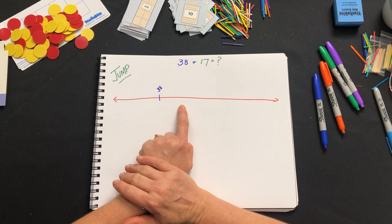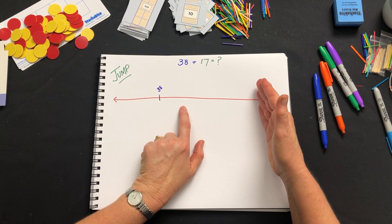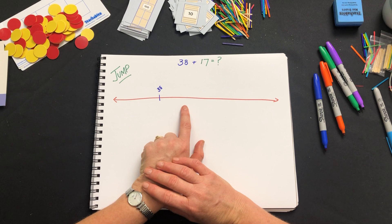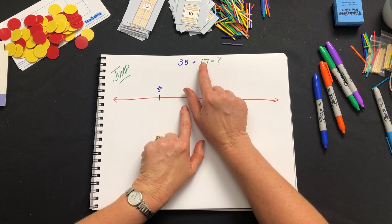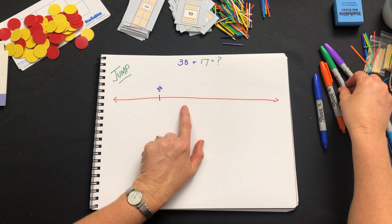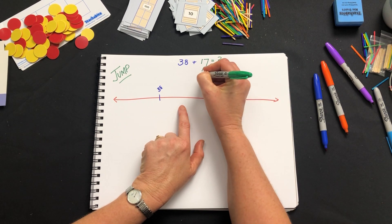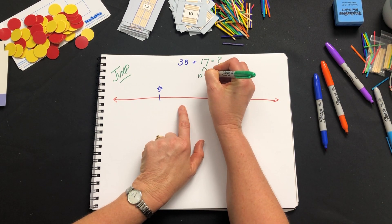So I'm going to jump but I'm not going to do just one jump and immediately add on the 17. I don't know what 38 plus 17 is. I need to break 17 down, partition it, and 17 is equal to 10 plus 7.